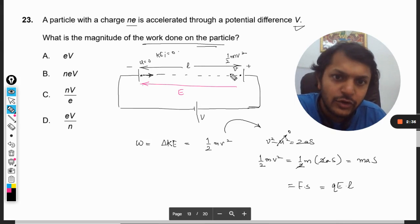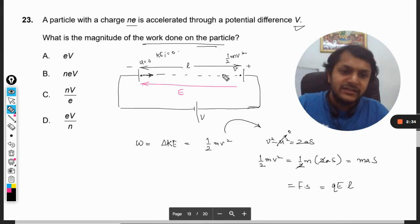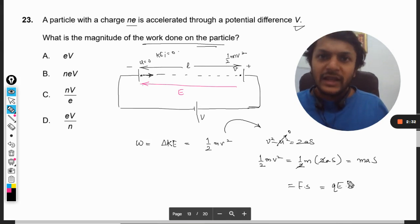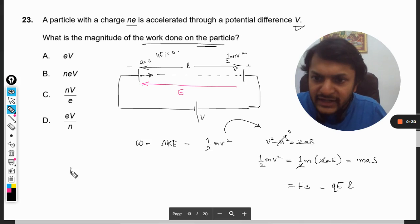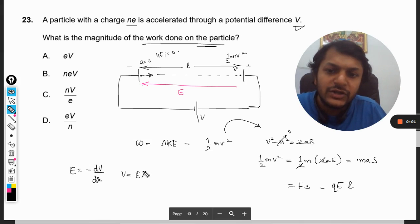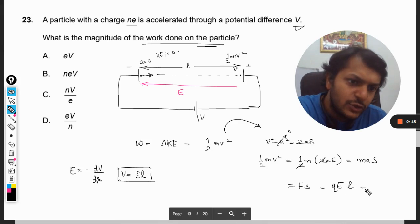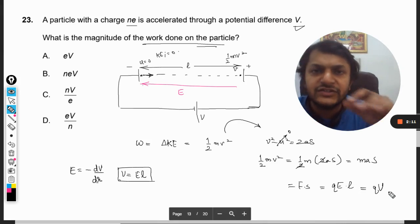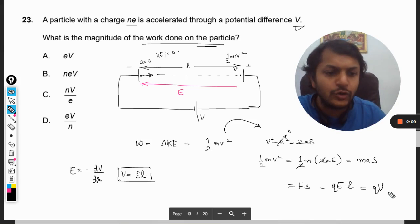What is e times l? We know e equals minus dV by dr, a very famous formula. If this is l, then V equals e into l when we integrate. So in place of e into l you can write V, the potential difference across the two electrodes. From this, the formula for work done is given by q into V.